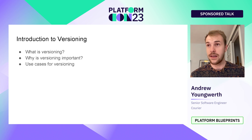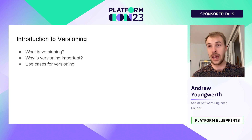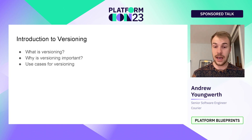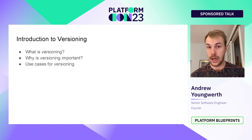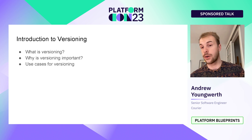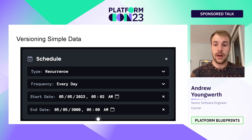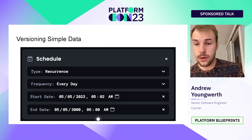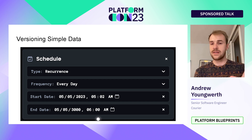In Courier's case, our products also use versioning. When you're designing a notification or an automation, we allow our users to roll back changes that they've made over time. So it's super useful in platforms like Courier or Google Docs. We'll give a quick example — in this presentation I'm going to use the product I worked on, which is Courier's automations platform, and we'll start with a simple piece of data.